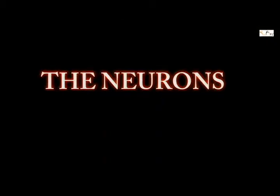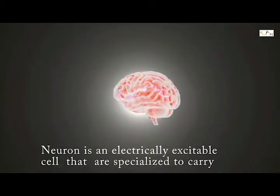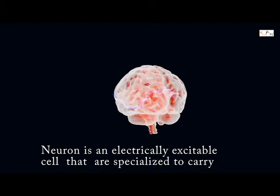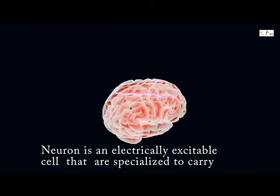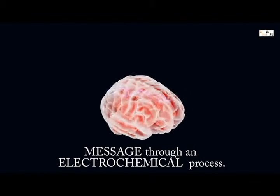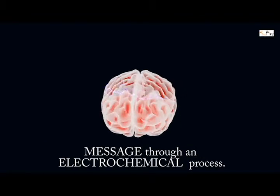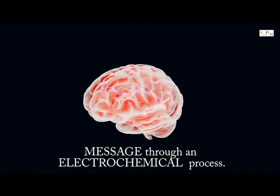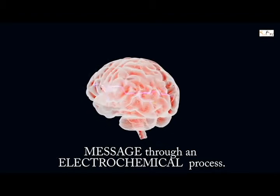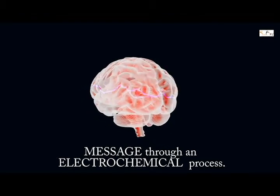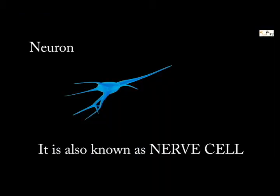The Neurons. A neuron is an electrically excitable cell that processes and transmits information through electrical and chemical signals. It is also known as a nerve cell.